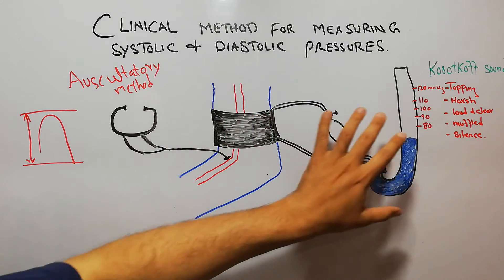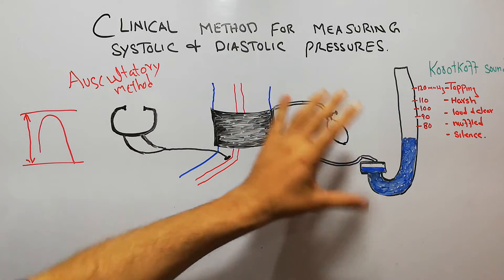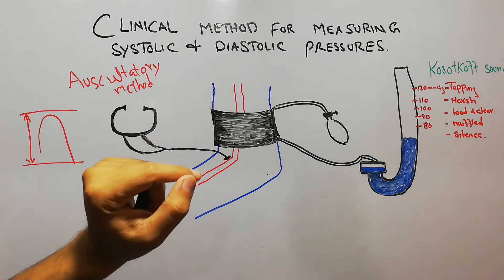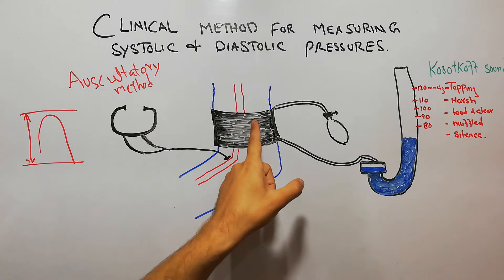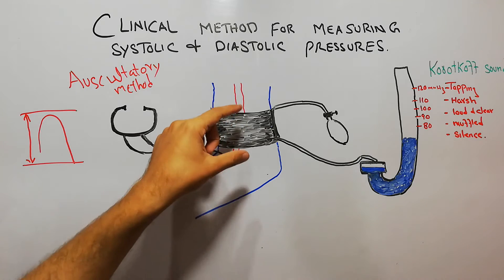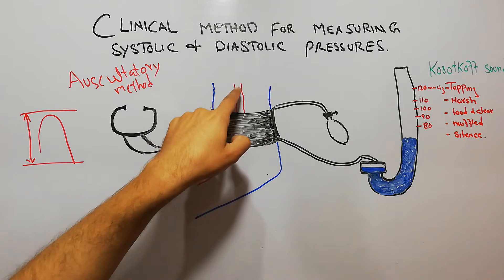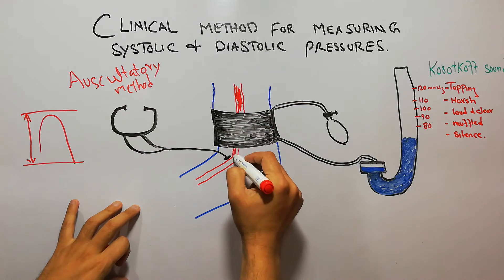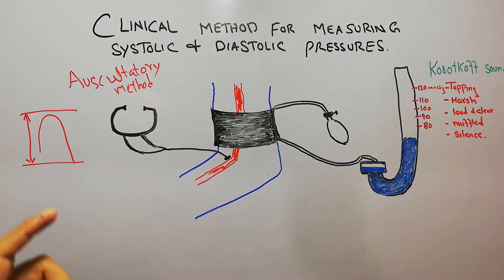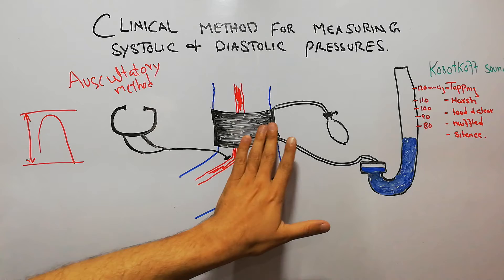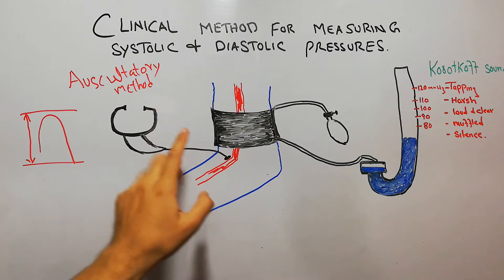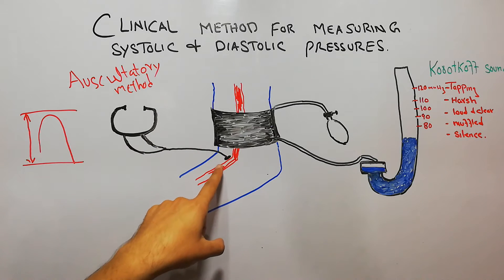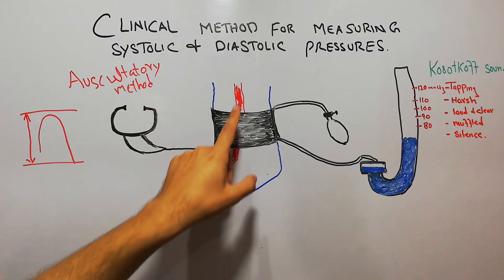This whole blood pressure measuring device is basically known as a sphygmomanometer. When the pressure inside the cuff is increased, this pressure is applied on the blood vessels carrying the blood. Before the pressure is increased, a stethoscope is placed here and the doctor listens to the sounds coming from this blood vessel — ideally the brachial artery.